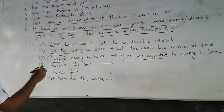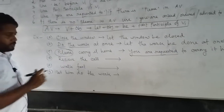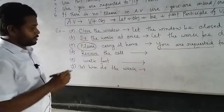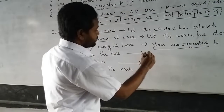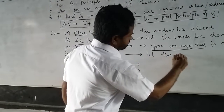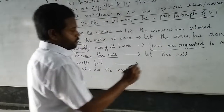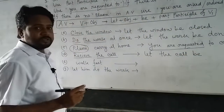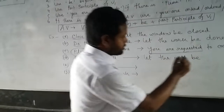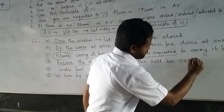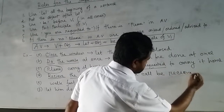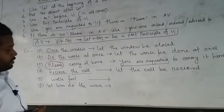Now look at example D. This sentence starts with the verb — it is similar to examples A and B. So in the same way we solve it: 'Let', then the object, then 'be', then the past participle form of the main verb. Here the verb is 'receive' — its past participle form is 'received'. The passive voice is: 'Let the call be received.'